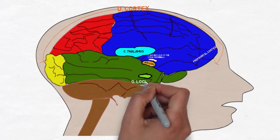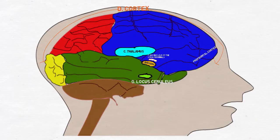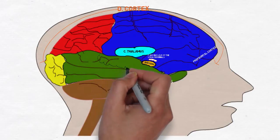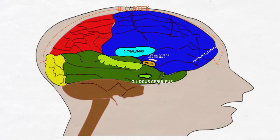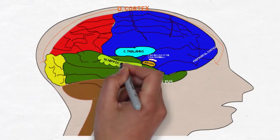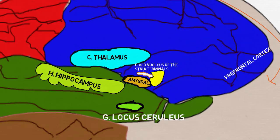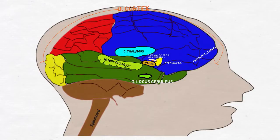The locus coeruleus receives signals from the amygdala and initiates the classic anxiety response: rapid heartbeat, increased blood pressure, sweating and pupil dilation. The hippocampus is your memory center, storing raw information from the senses along with emotional baggage attached to the data by the amygdala.